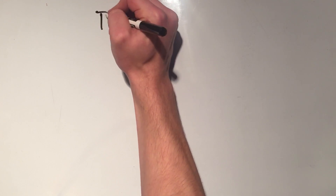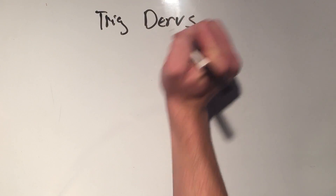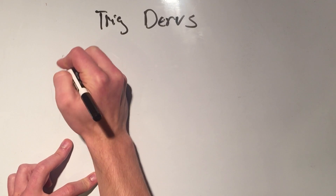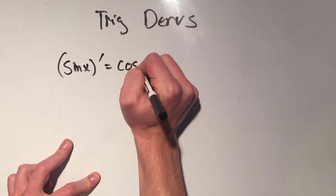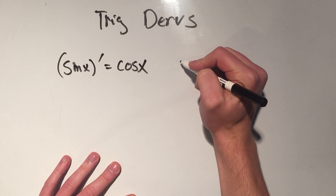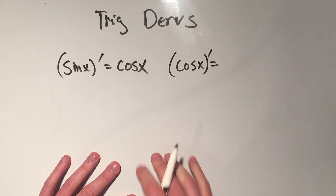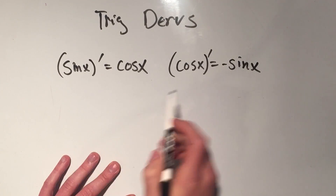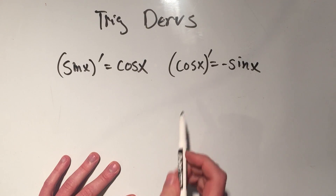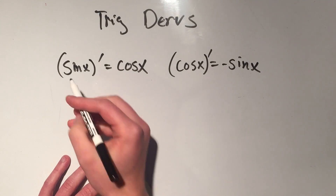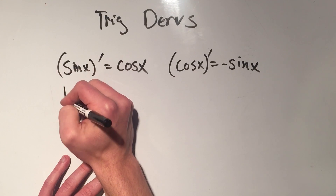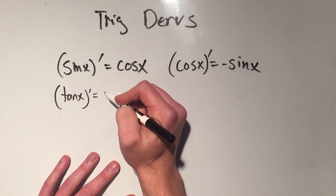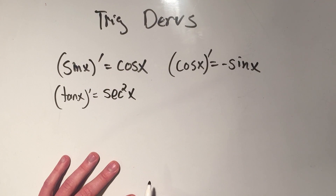Now we're going to talk about trig derivatives. The derivative of sine is cosine — just remember it. The derivative of cosine is minus sine. You'll see a pattern that every co-function will have a negative. The derivative of tangent is secant squared.